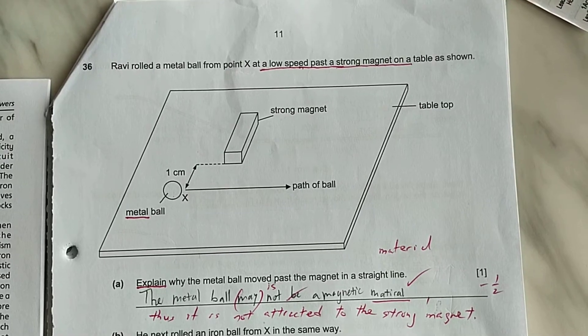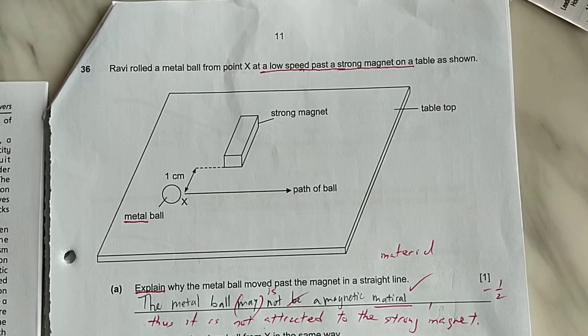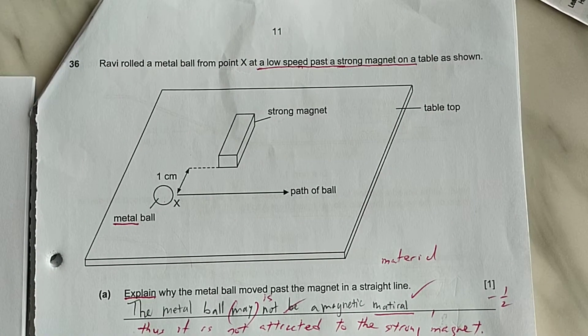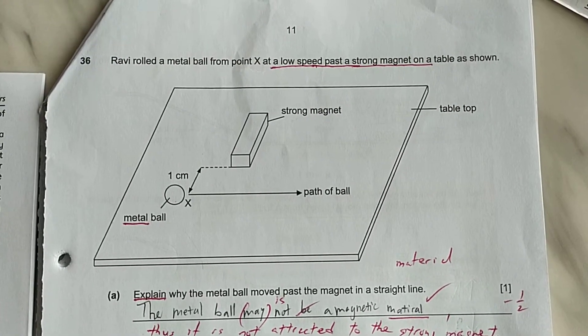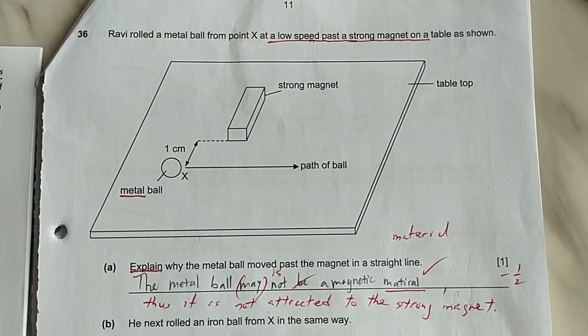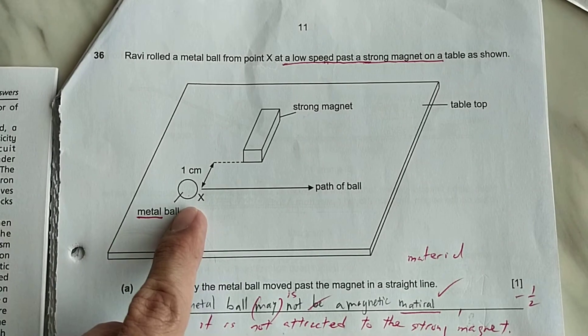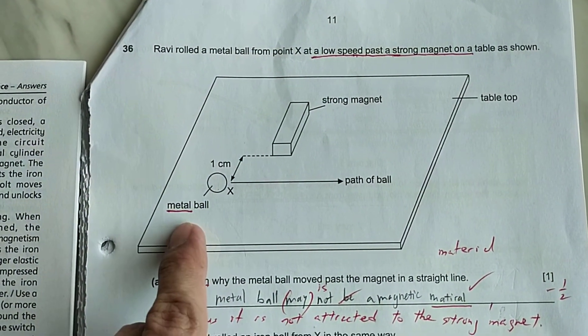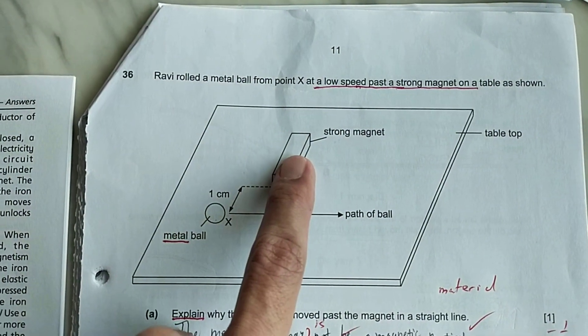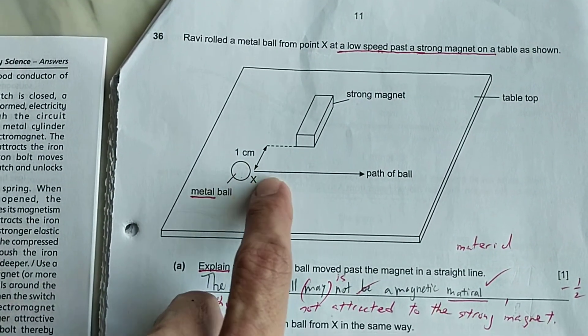This is the 2020 PSLE science section B question 36. It says Ravi rolled a metal ball from point X at a low speed past a strong magnet on a table as shown. This is the metal ball which I underline, X path of ball. It rolled this way. This is a strong magnet which is at one centimeter away from its roll path.